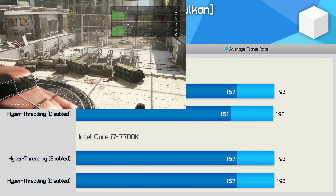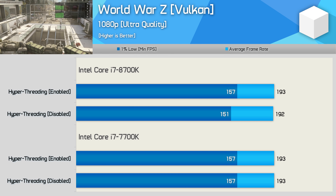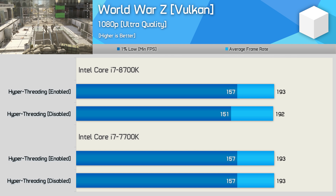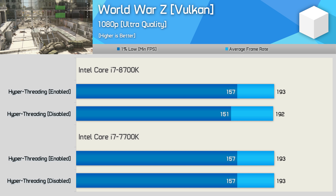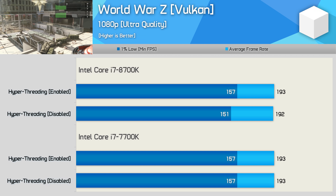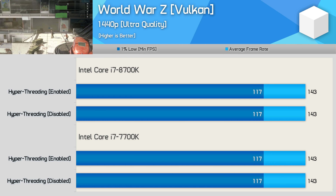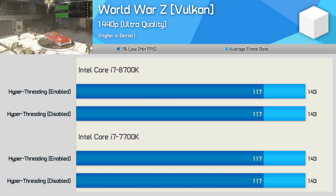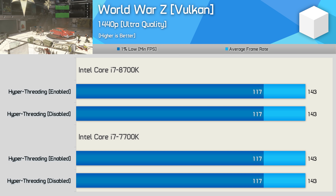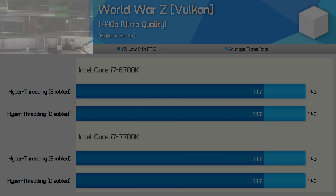Finally, we have WWZ results using the low-level Vulkan API. Here the game runs just fine with 4 cores, so neither CPU suffers with hyperthreading disabled. Naturally we see a similar thing at 1440p, where both CPUs are able to extract the maximum performance from the RTX 2080 Ti.